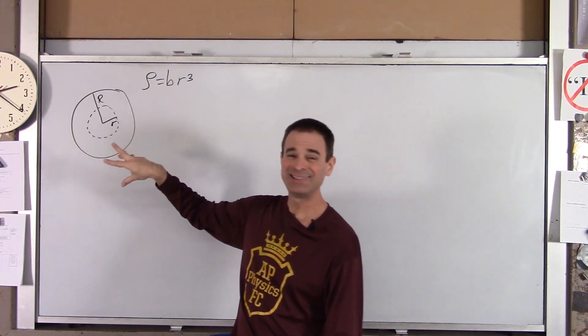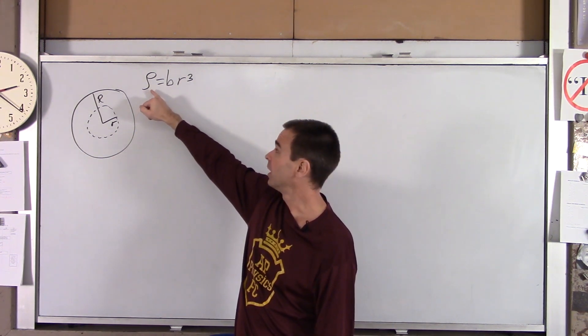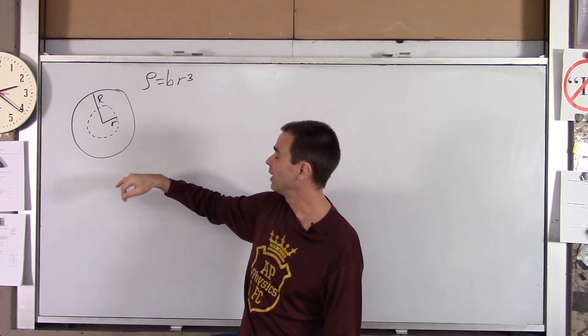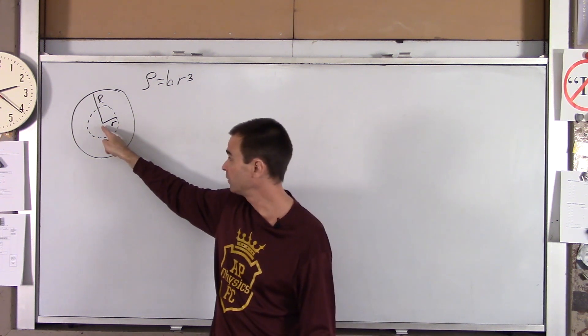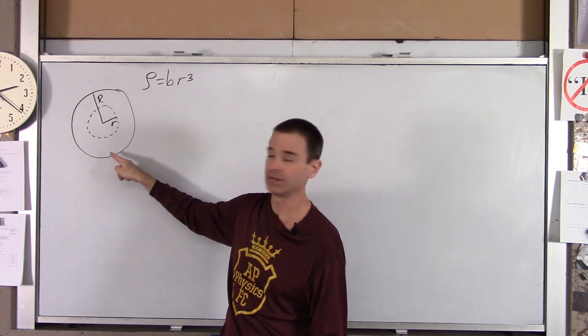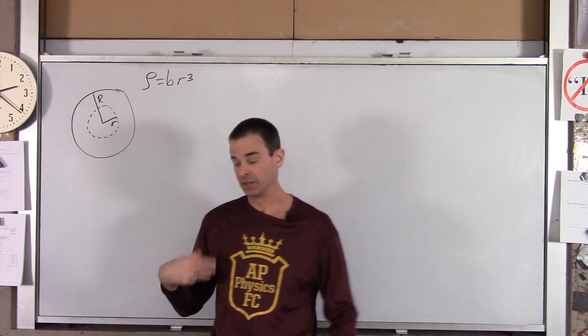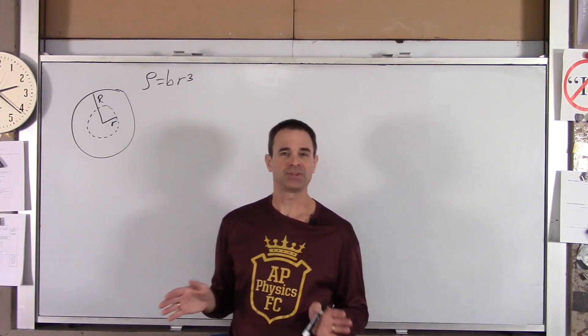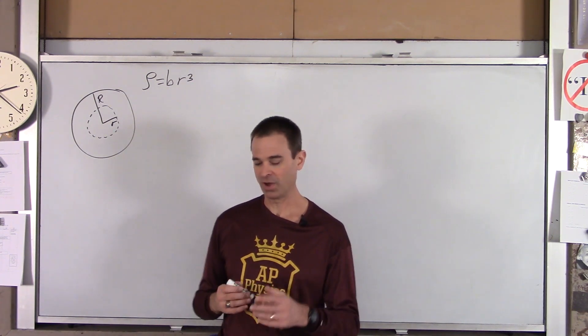The charge density within the fuzzy ball, which is rho, is proportional to r cubed. It's Br cubed. So the idea being at the center of the ball there's almost no charge, and as you walk outward or crawl outward from the ball, the charge gets more and more dense. It's going to create an unusual electric field inside the ball.